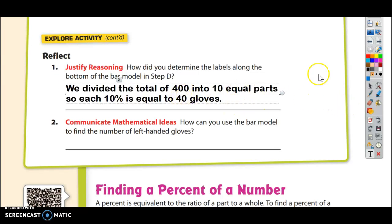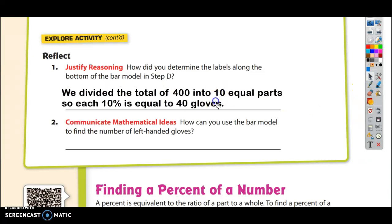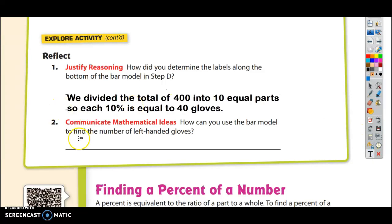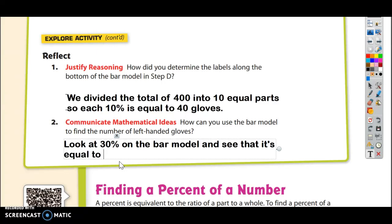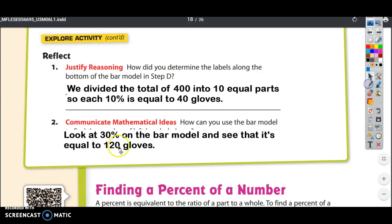And then question 2 reads, how can you use the bar model to find the number of left handed gloves? What we do is look at 30% on the bar model and the reason why we're looking at 30% is because the problem at the beginning of the page said that 30% of 400 gloves were left handed. So we look at 30% on the bar model and see that it's equal to 120 gloves. Cool.